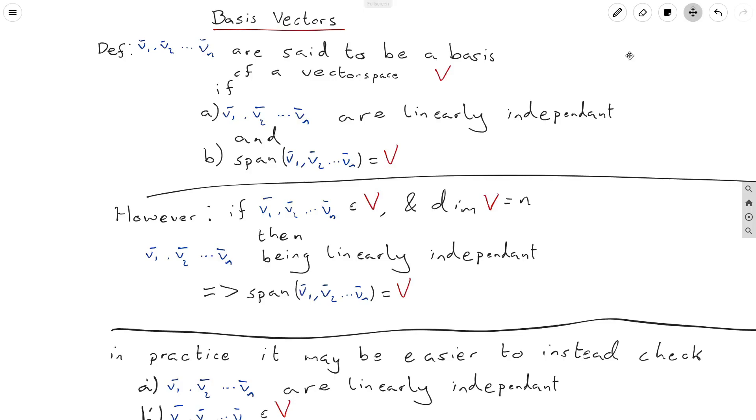First of all, what I've labeled a here is that v1, v2 up to vn are linearly independent, and b, the span of v1 up to vn is equal to V.